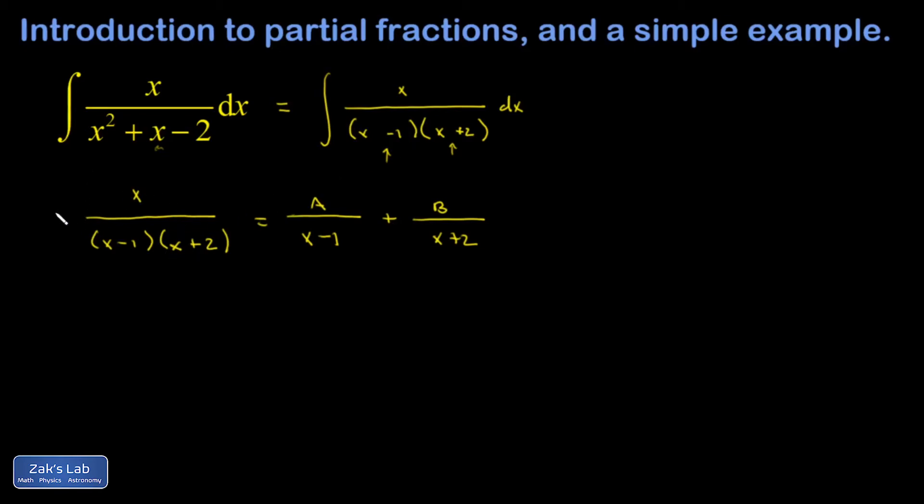So what I'm going to do in this case is multiply both sides by the least common denominator, which is sitting right here on the left-hand side. That's going to kill all the fractions in the problem. On the left-hand side, both factors will cancel and I'll be left with an x. On the right-hand side, when I apply (x minus 1)(x plus 2) to this factor, the x minus 1 will cancel and leave me with A times (x plus 2). In the final term, the x plus 2 cancels and leaves me with B times (x minus 1).